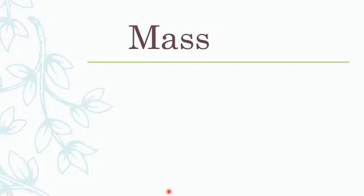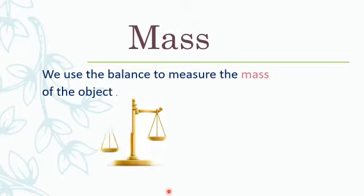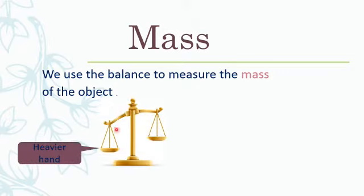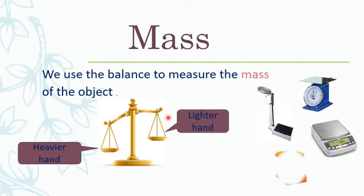The second part of our lesson is mass. We use the balance to measure the mass of an object. This is a balance. The bottom hand shows me the heavier object, and the top hand shows me the lighter object. Here we have different kinds of balances we can find in our real life.